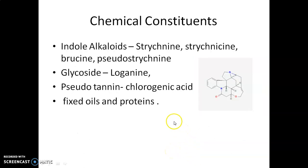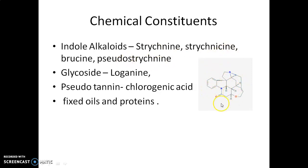The chemical constituents present in Nux Vomica mainly consist of 1 to 5% bitter indole alkaloids. The indole alkaloids mainly present are strychnine, brucine, strychnesine, and pseudostrychnine. Here you can see the structure of strychnine along with other alkaloids. Other important chemicals present include the glycoside loganin, pseudotannins, chlorogenic acids, and — since it is a seed — fixed oils and proteins are also present.